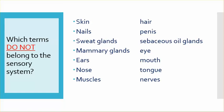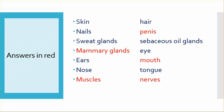Which terms do not belong to the sensory system? The answers are in red. The penis, mammary glands, mouth, muscles, and nerves do not belong to the sensory system.